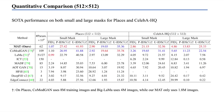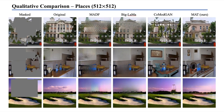We evaluate our model on Places and CelebA-HQ datasets and compare with a number of state-of-the-art methods. As shown in this table, the proposed model achieves superior performance on CelebA-HQ and comparable results to the best existing method on Places with much fewer training data. Our method generates photorealistic results with fewer visual artifacts.